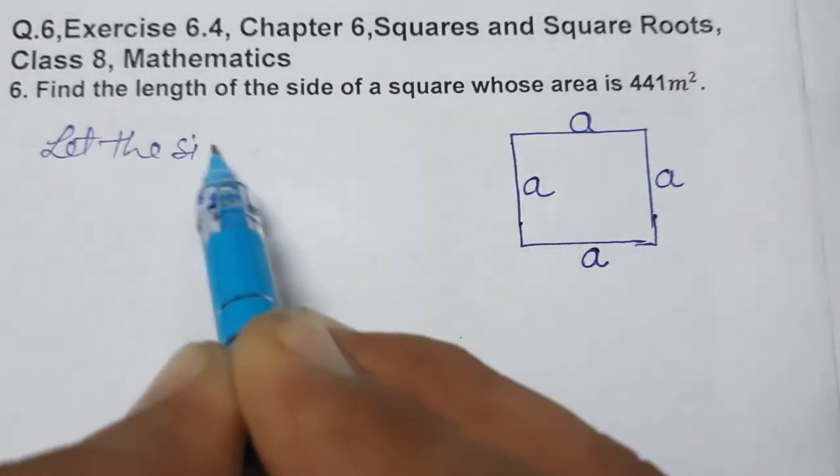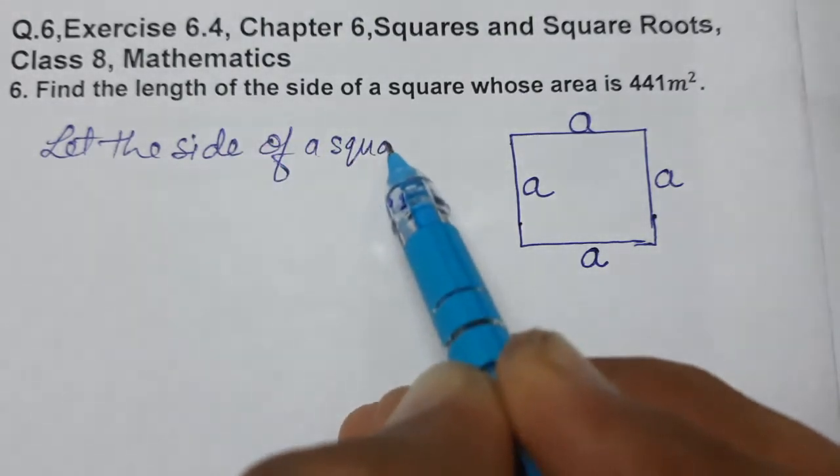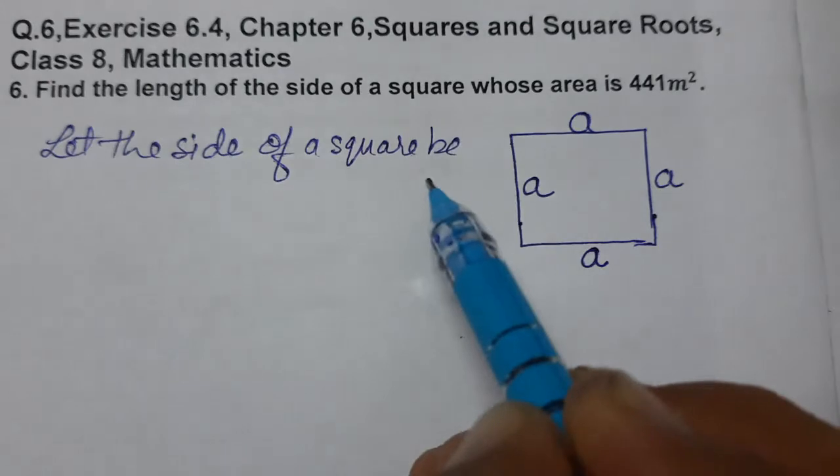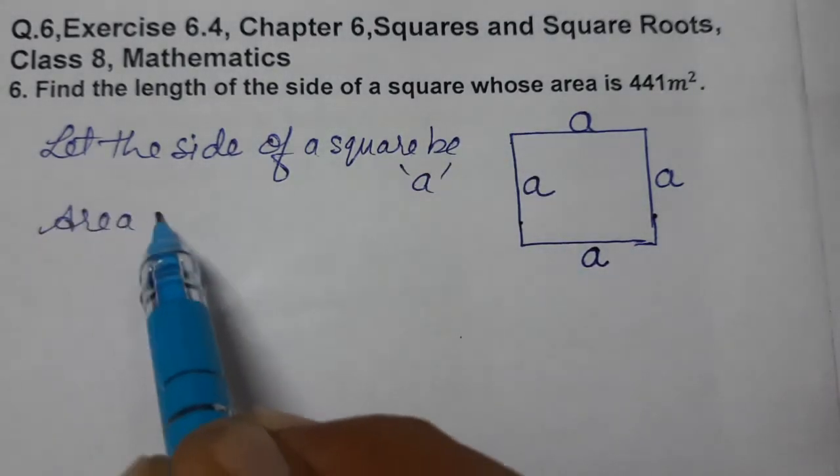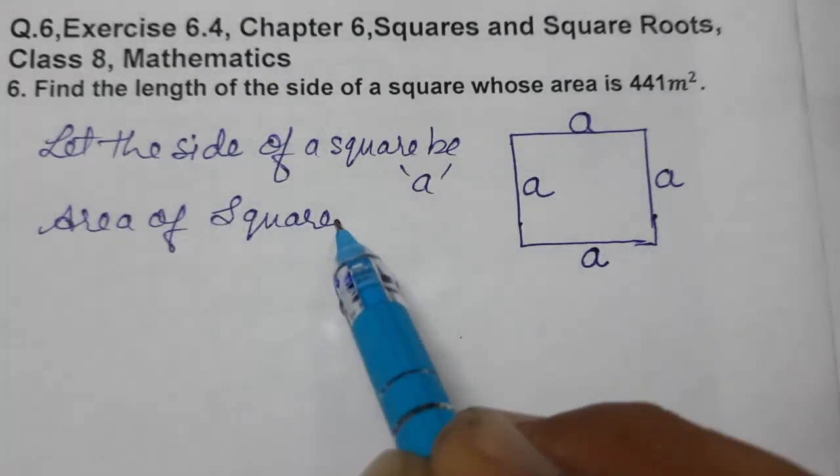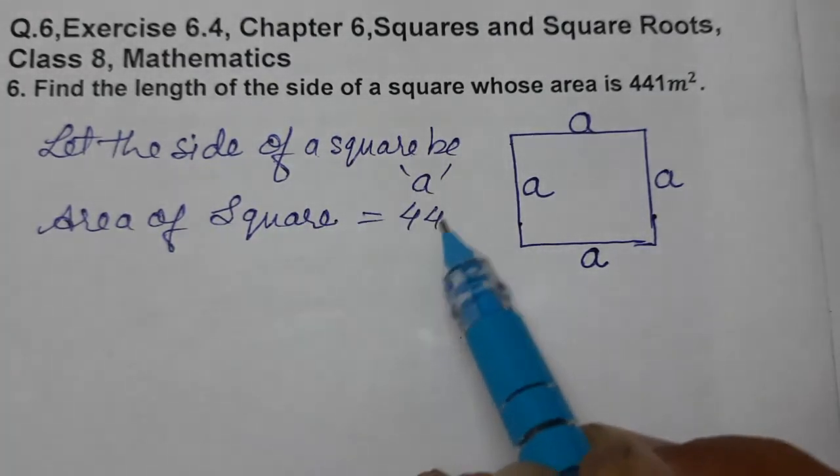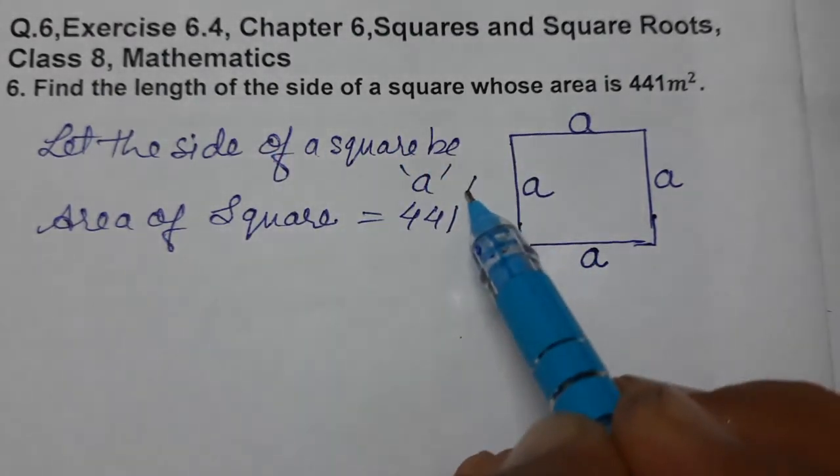Let this side of the square be a units. Then area of square is given to us. Area of square is 441 meter square and let the side of the square be a meter.